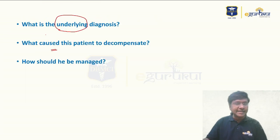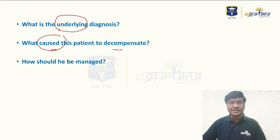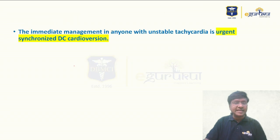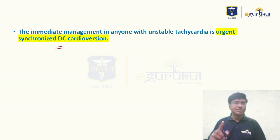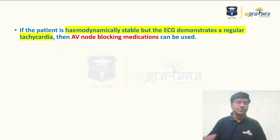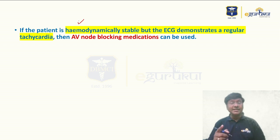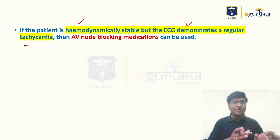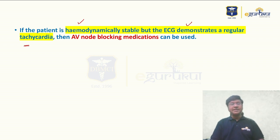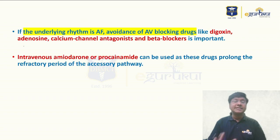Now, how should this patient be managed? The patient is hemodynamically unstable. For any hemodynamically unstable arrhythmia, the first-line treatment is synchronized DC cardioversion. If the patient were hemodynamically stable and the ECG showed regular tachycardia, you would give AV nodal blocking medication. However, our patient has an irregular rhythm — atrial fibrillation with WPW syndrome — so can you give AV nodal blocking agents? The answer is a big no.